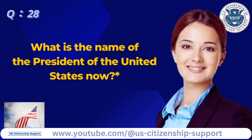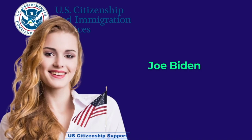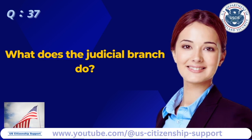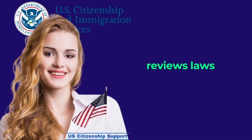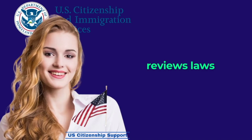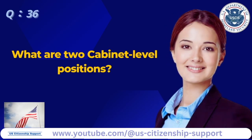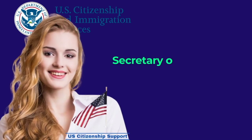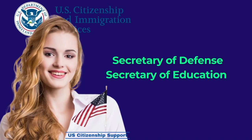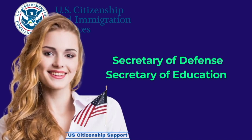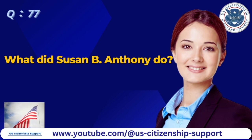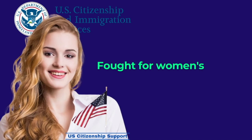What is the name of the President of the United States now? Joe Biden. What does the Judicial Branch do? Reviews laws. What are two Cabinet-level positions? Secretary of Defense and Secretary of Education. What did Susan B. Anthony do? Fought for women's rights.